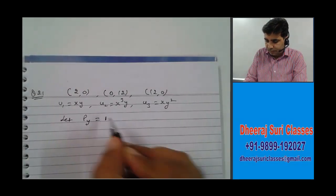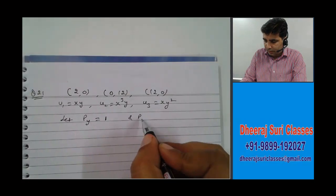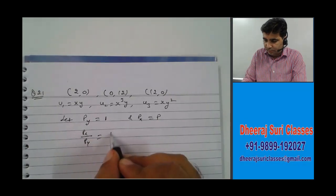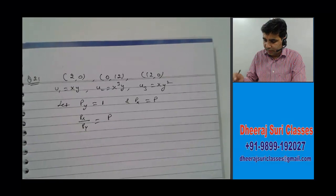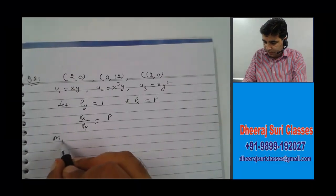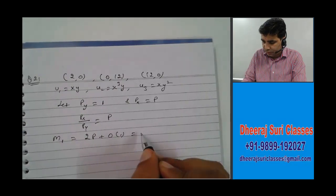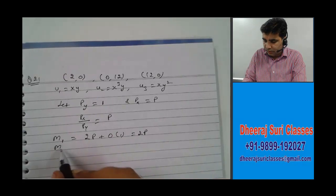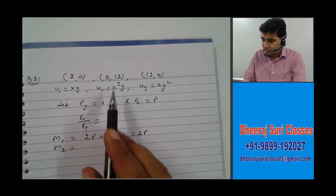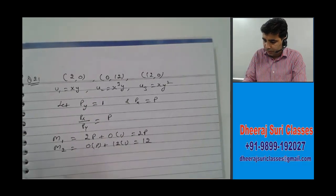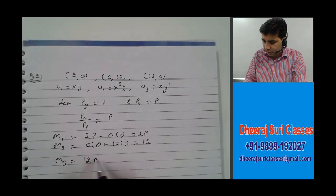Py is 1 and we select Px is P, so Px by Py is effectively P. What is the income for agent 1? For agent 1 the income would be 2P plus 0 into 1, that means 2P. Income for agent 2 would be 0 into P plus 12 times 1, that is 12. And income for agent 3 would be 12P plus 0 into 1, that is 12P.